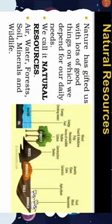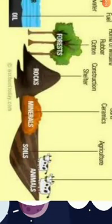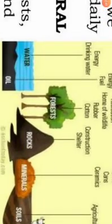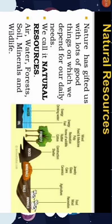Natural resources — nature has gifted us with lots of good things on which we depend for our daily needs. We call these natural resources, like air, water, forest, soil, minerals, and wildlife. Animals are there too. You can see in the picture: soil, minerals, animals, rocks, water, and oil — these all are natural resources.